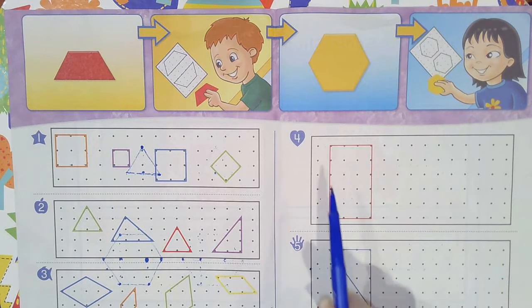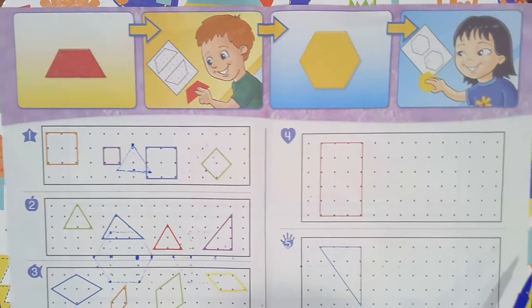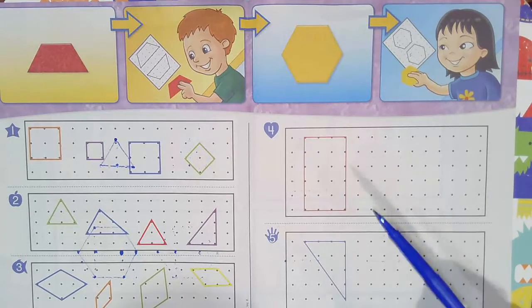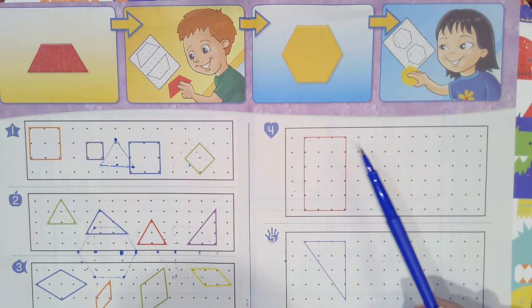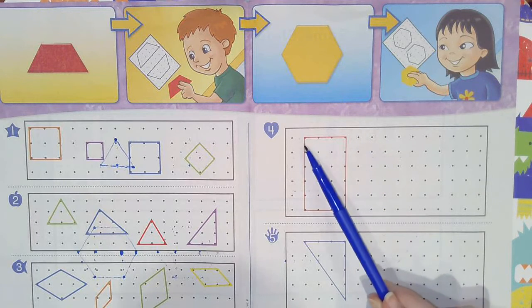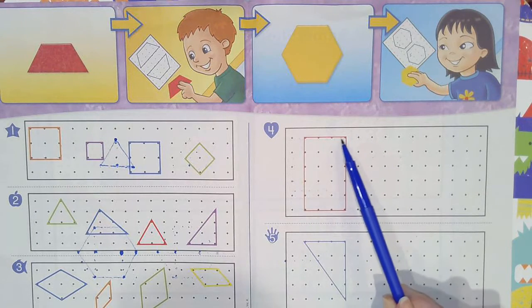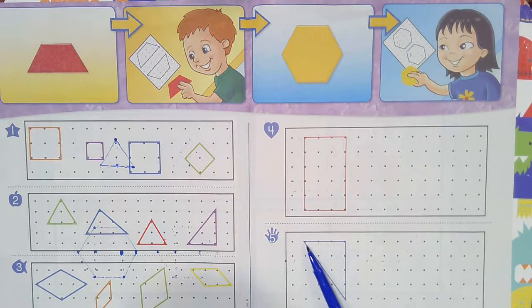Okay, we are on number four now. Over here, you are going to draw a figure that is the same size and same shape as the shape that you see in these rectangles.